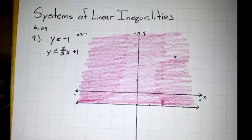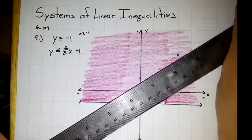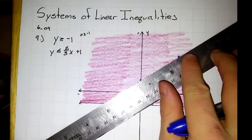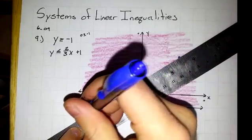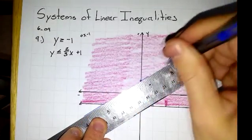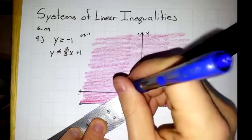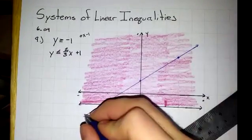This is equal to, so once again it will be a solid line instead of a dotted. Put our arrows on there.